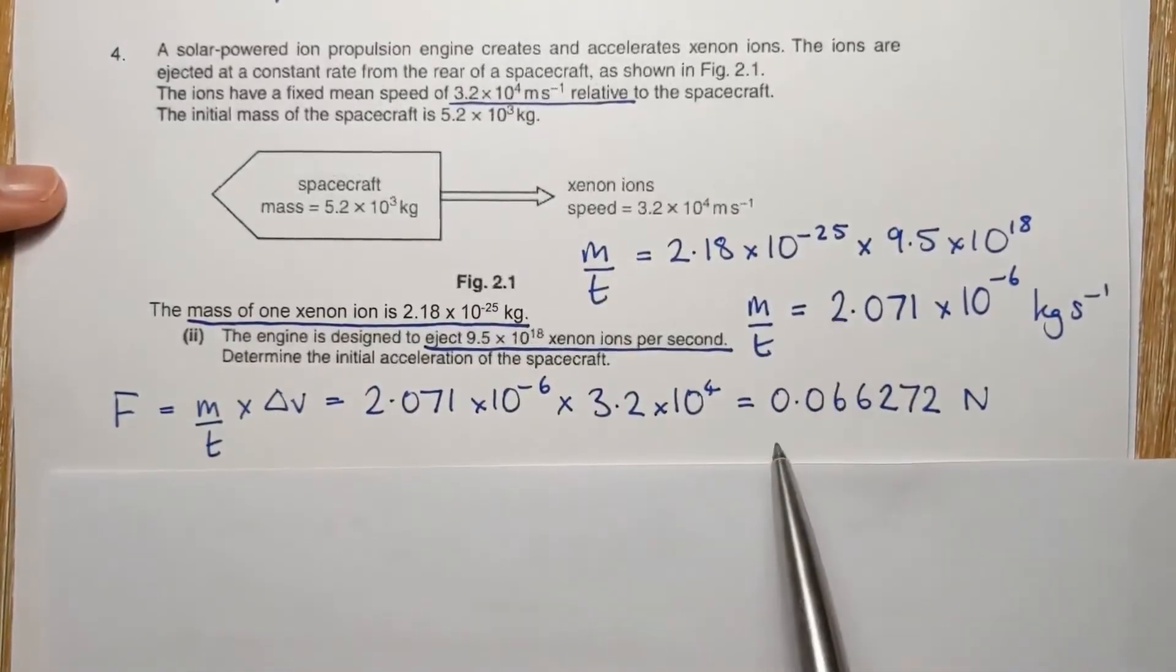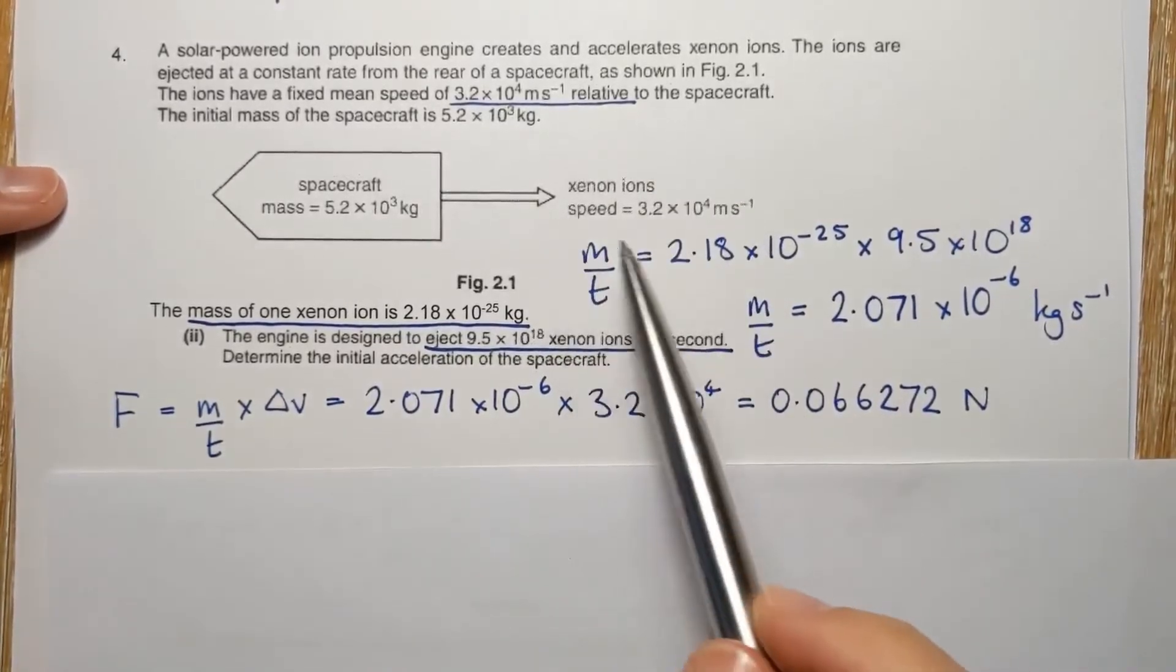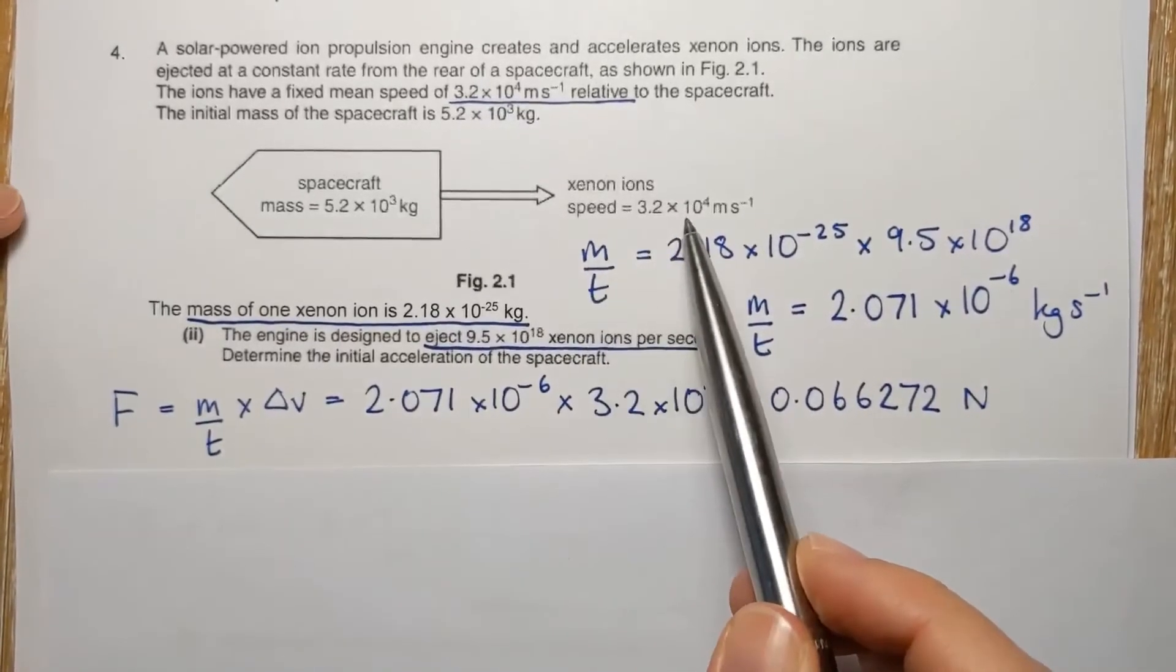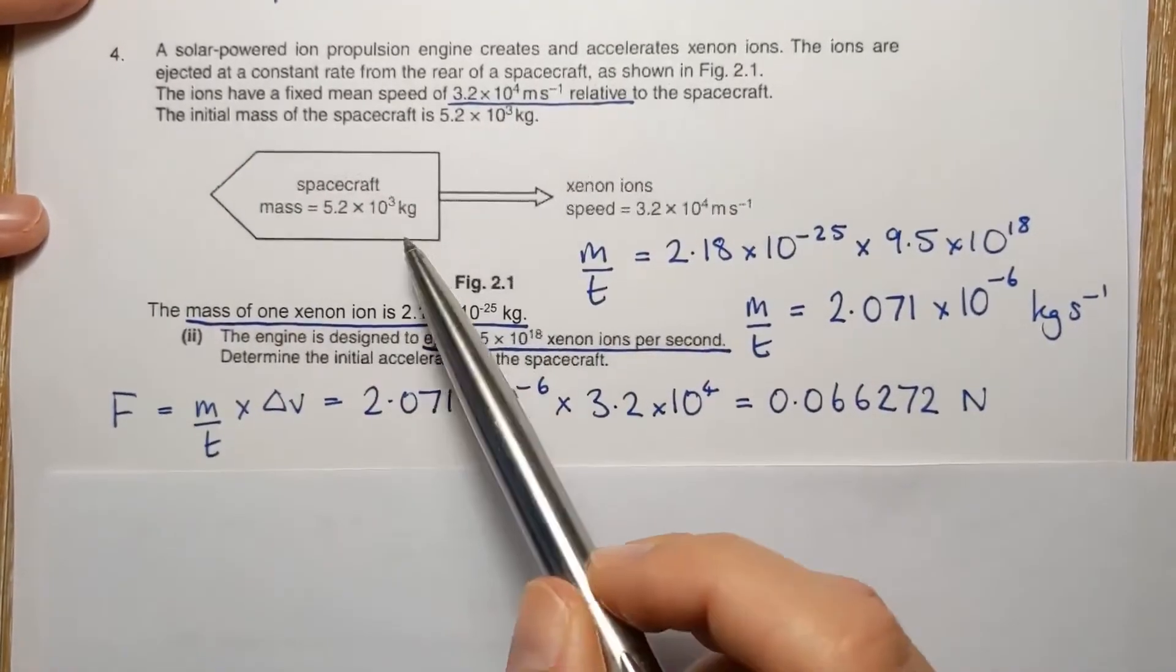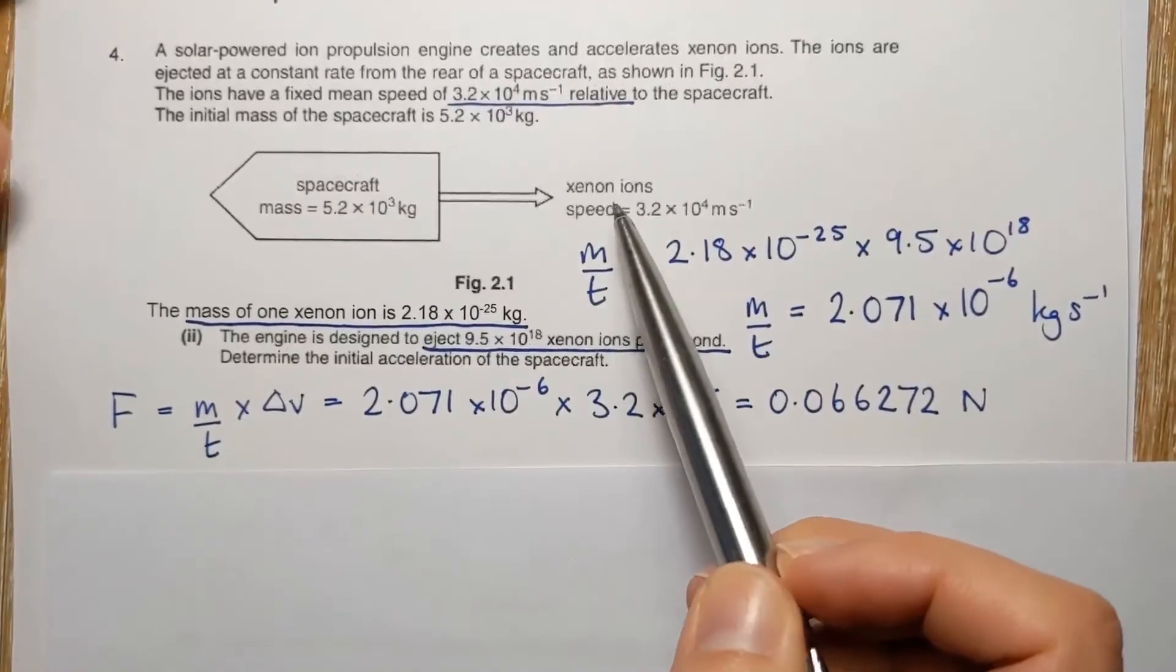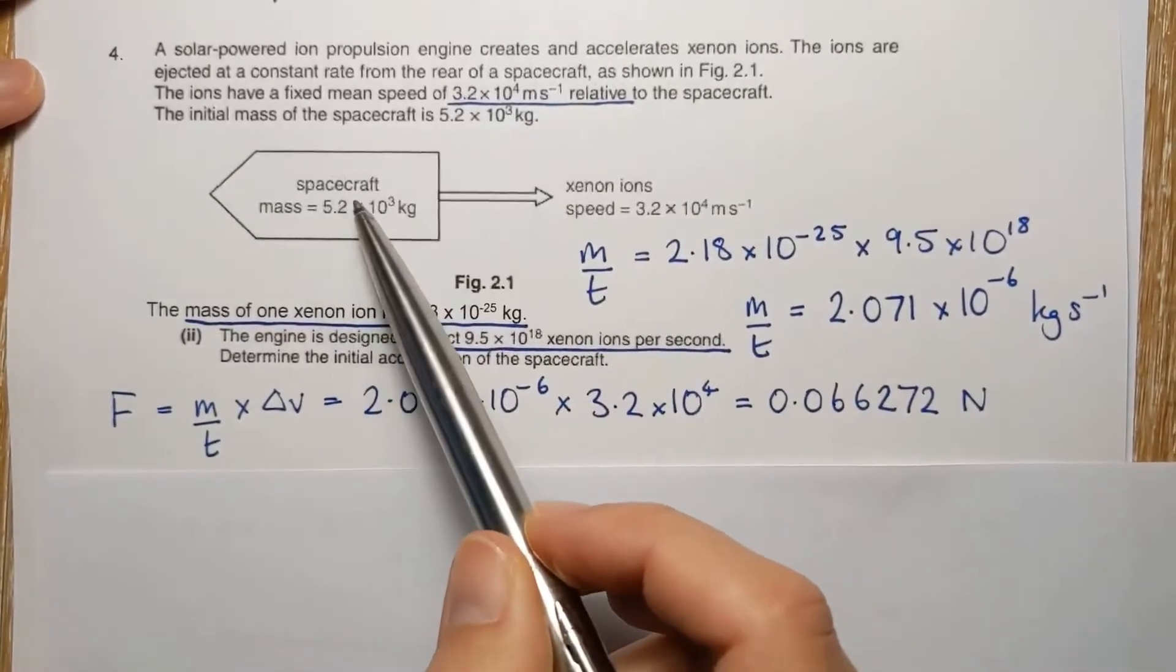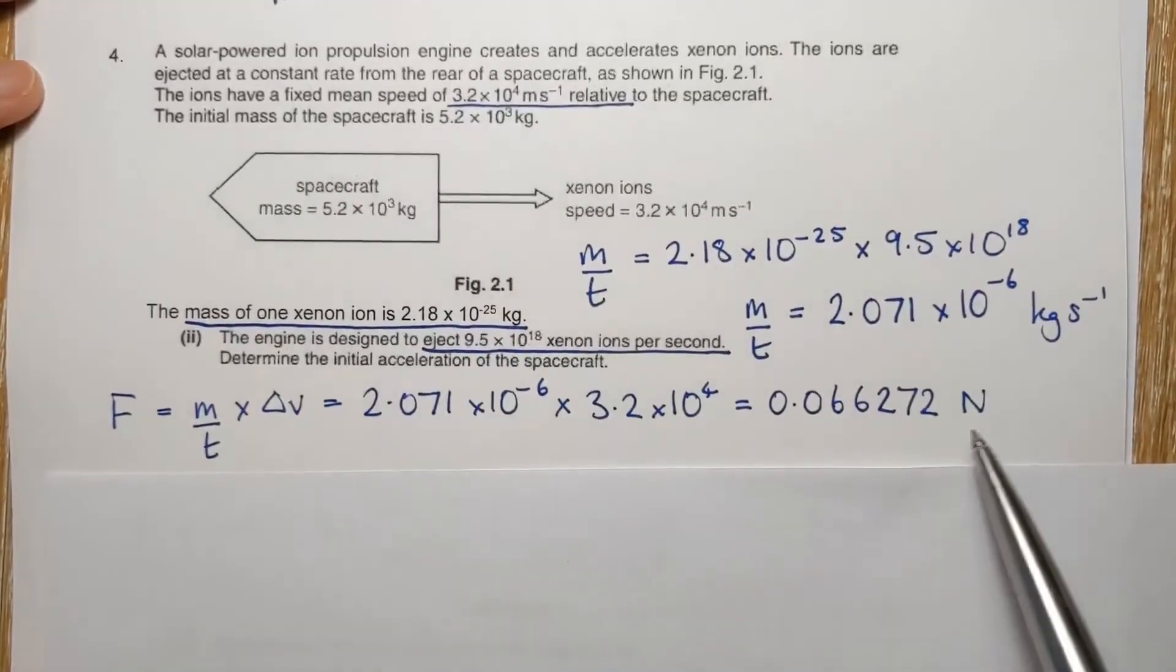Okay, and notice up till now, we've been calculating things for the xenon ions. So this is the force that causes the xenon ions to speed up. But, so this is the force that the spacecraft exerts on the xenon ions. But by Newton's third law, which is the next video, the xenon ions exert the same force back on the spacecraft. So the force on the spacecraft is also this.